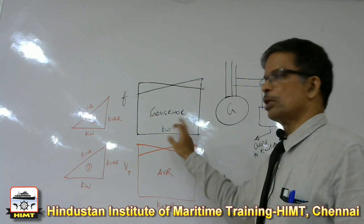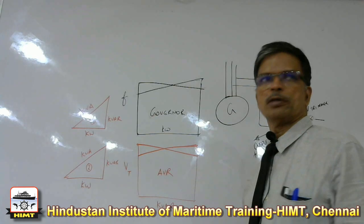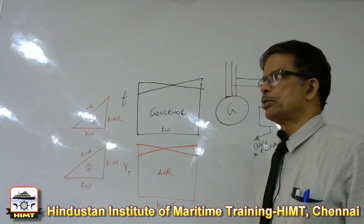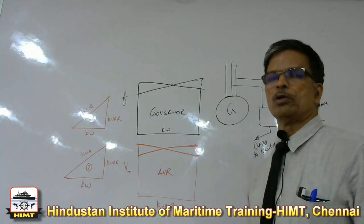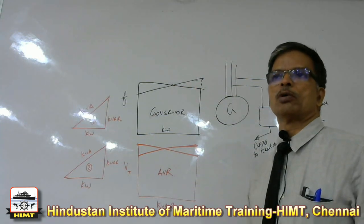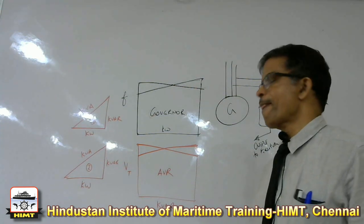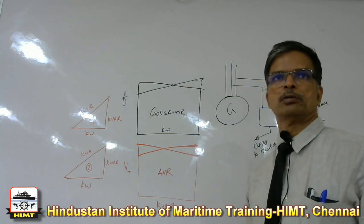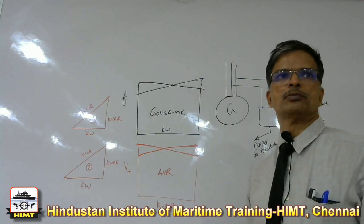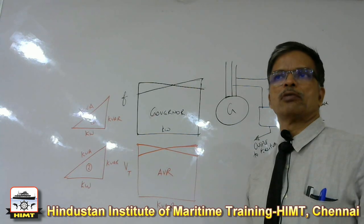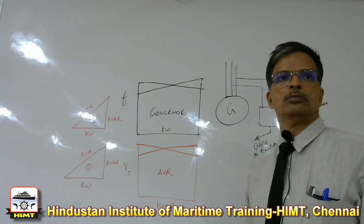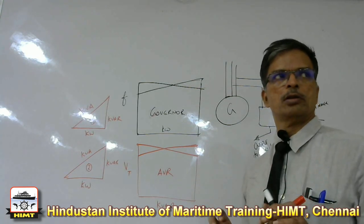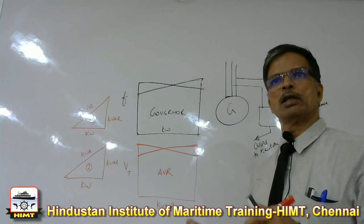Zero droop governor will mean unstable kilowatt sharing. It is because of this nature — having a droop in the AVR — that sometimes you will come across a problem on board your ship where you are running two generators in parallel. Both will show equal kilowatt, but they will show unequal current and their power factor will differ.